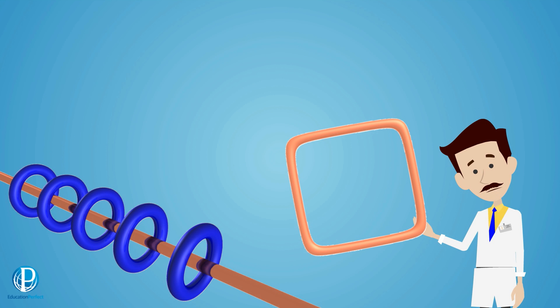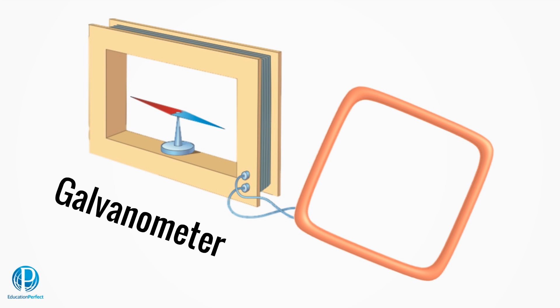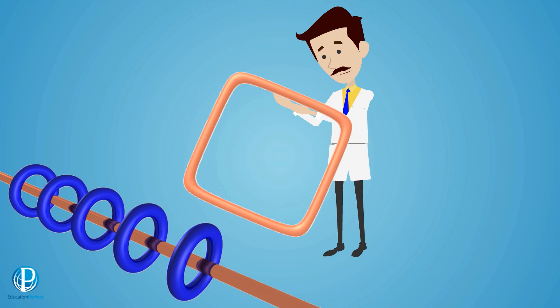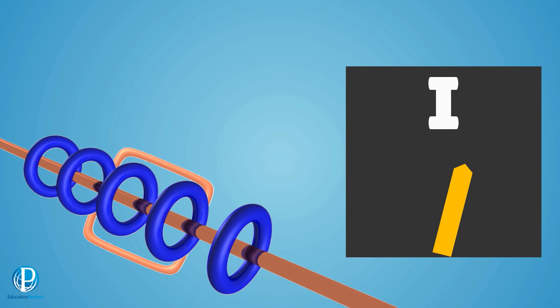I'm going to take this loop of wire and stick it inside the magnetic field. The loop contains something called a galvanometer, which is a very sensitive ammeter for measuring tiny currents. Watch what happens. When I insert the loop into this magnetic field, the galvanometer moves. It is detecting a small current.